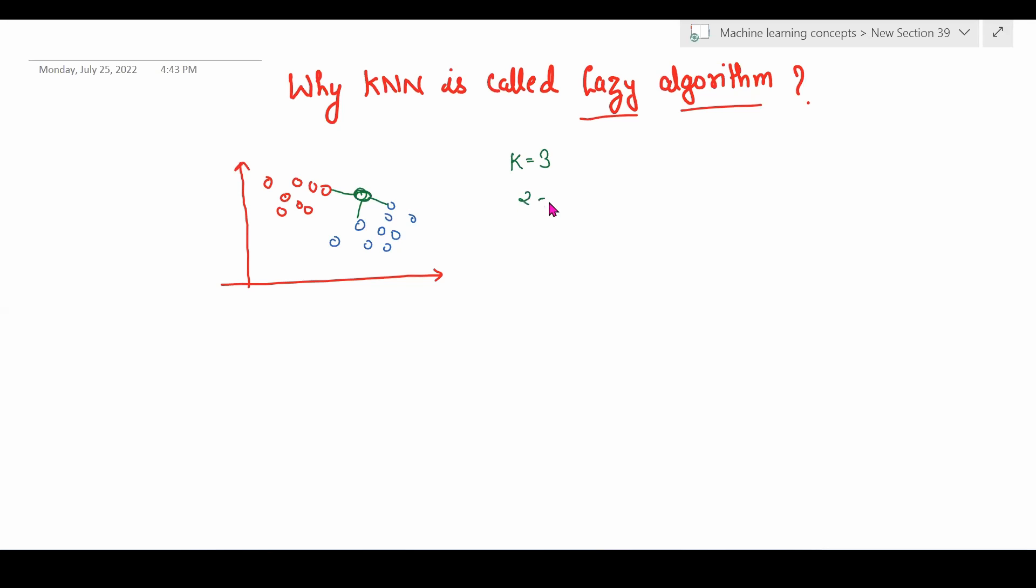Two are blue and one is red, so we consider that the new data point belongs to the blue class. This is how KNN works.